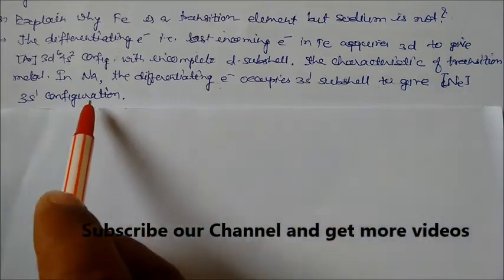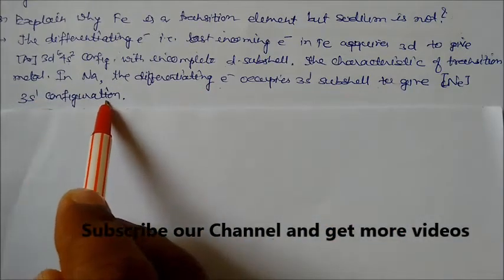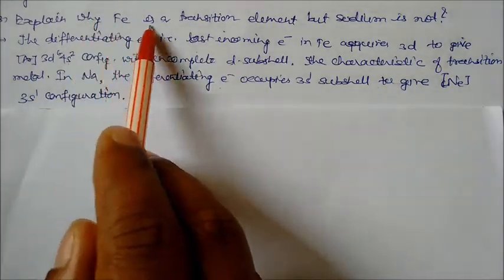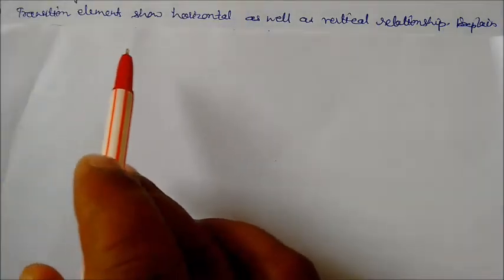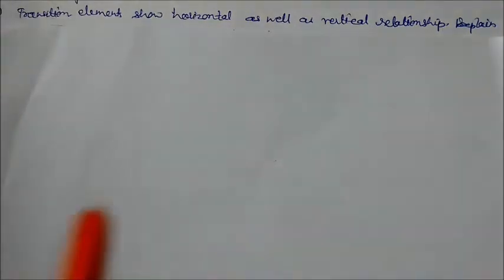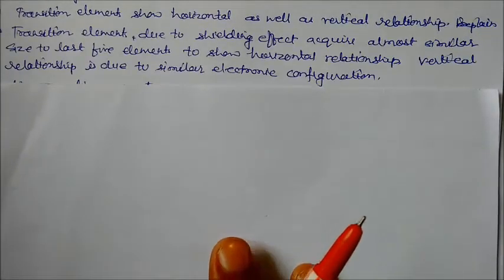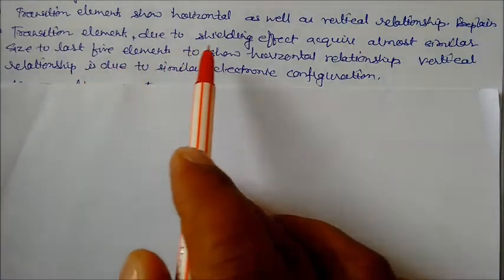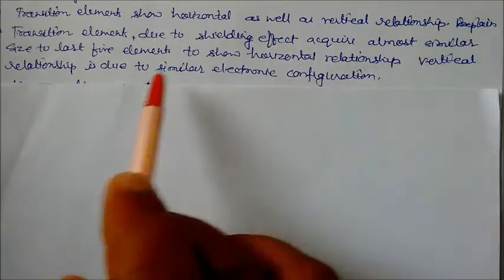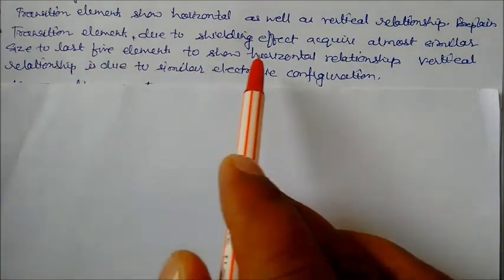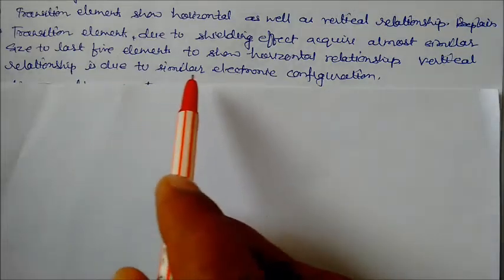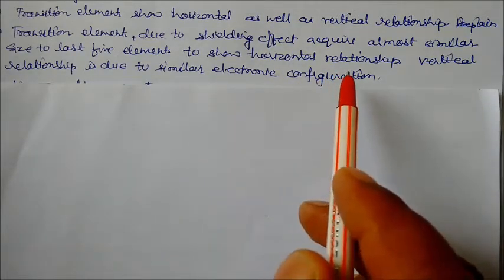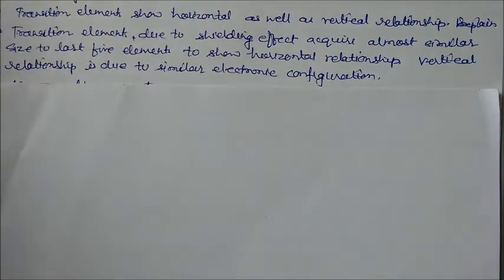Transition elements show horizontal as well as vertical relationships. Explain. Transition elements due to shielding effect acquire almost similar size to the last five elements, so they show horizontal relationships. Vertical relationship is due to similar electronic configuration. That's why they show horizontal as well as vertical relationships.